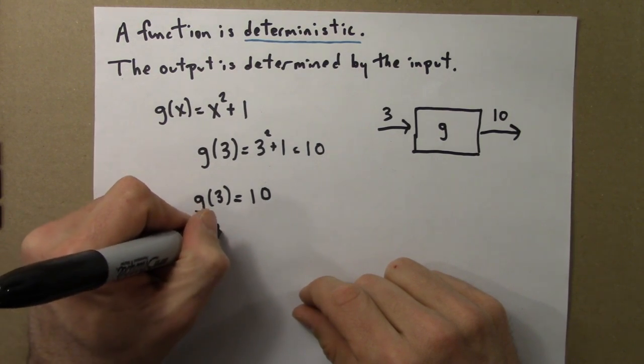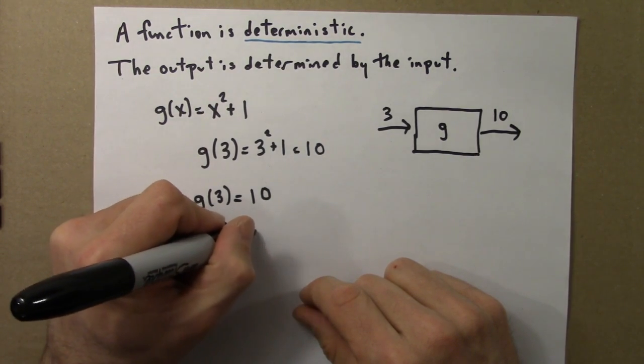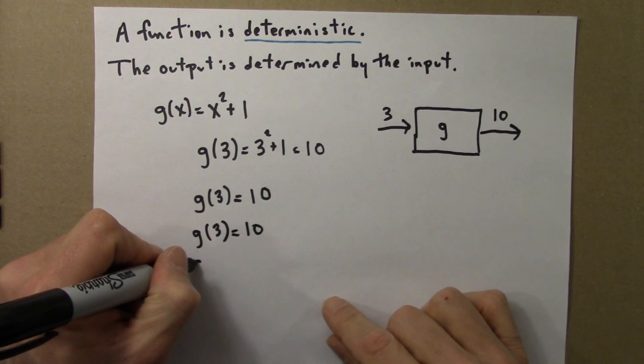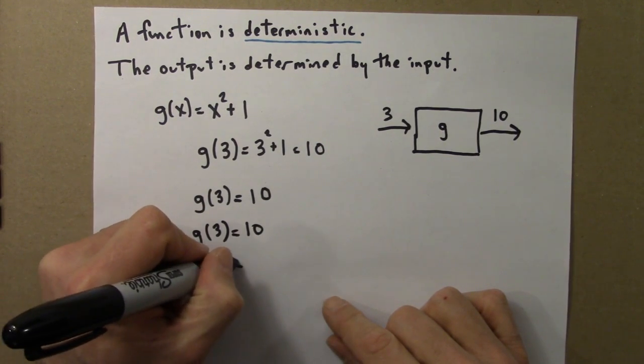For this function, a little while later, g of three is still ten. And a little while later still, g of three is still ten.